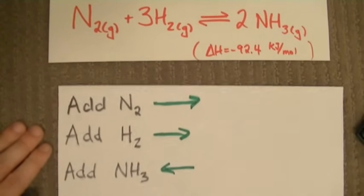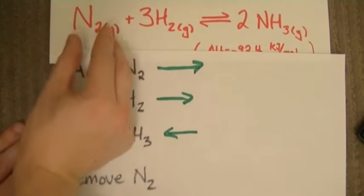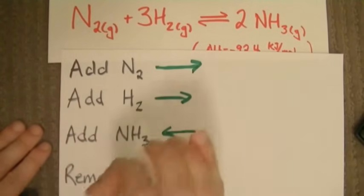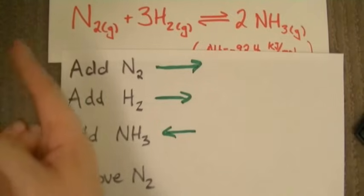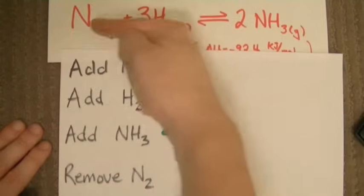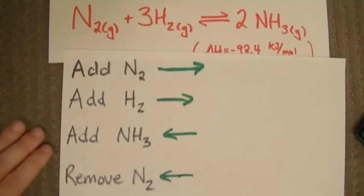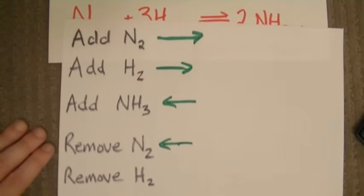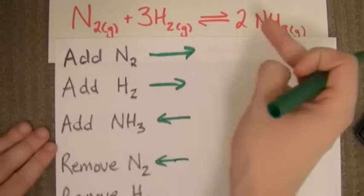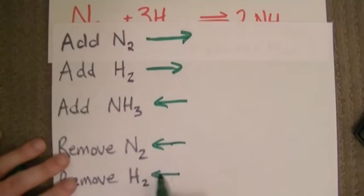Let's try this again. What if we remove some nitrogen? If we remove some of the nitrogen in the system, we want to replace it to offset the change. To replace the nitrogen, we have to convert some of the ammonia back into nitrogen by shifting to the right. The same is true if we want to replace some missing hydrogen. If we remove one of the reactants, we want to replace it, so we shift our equilibrium to the left.